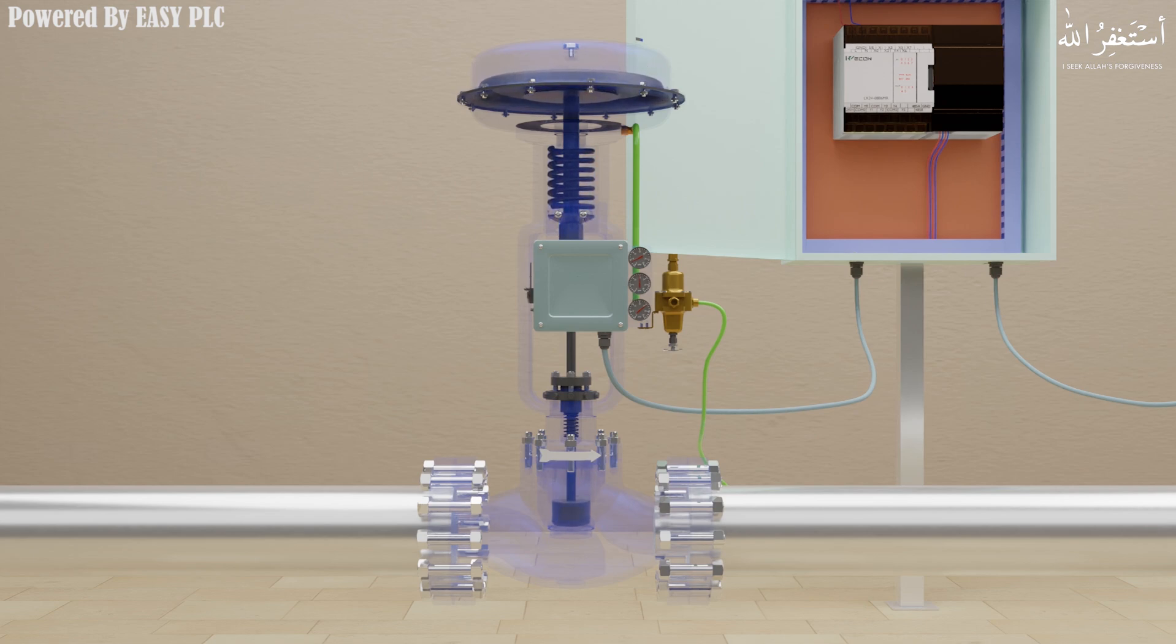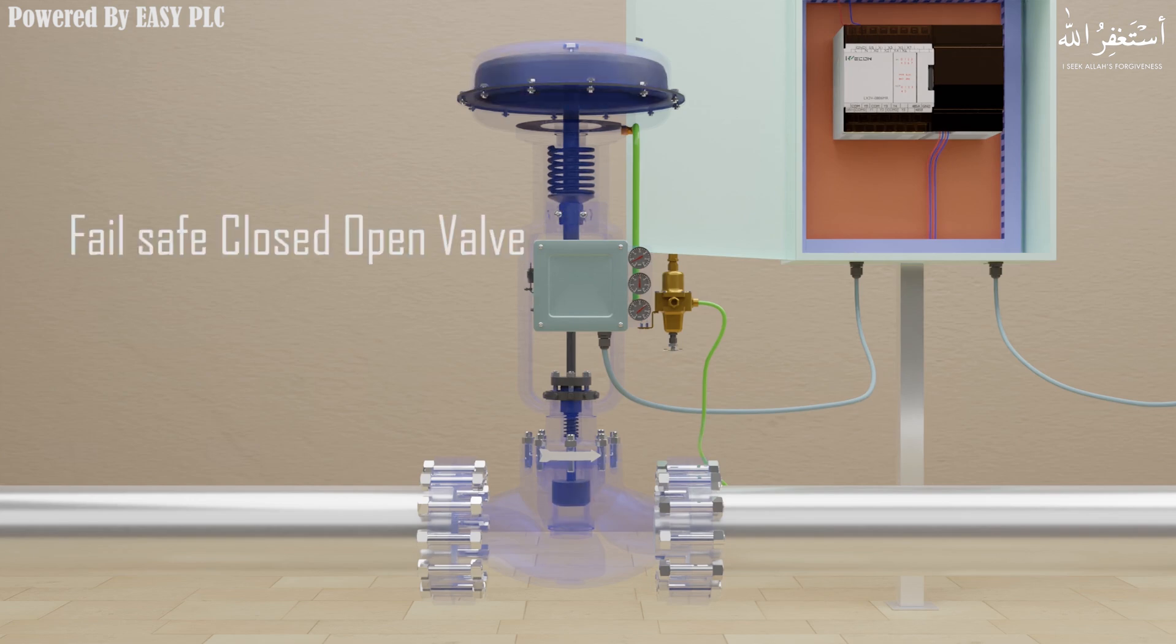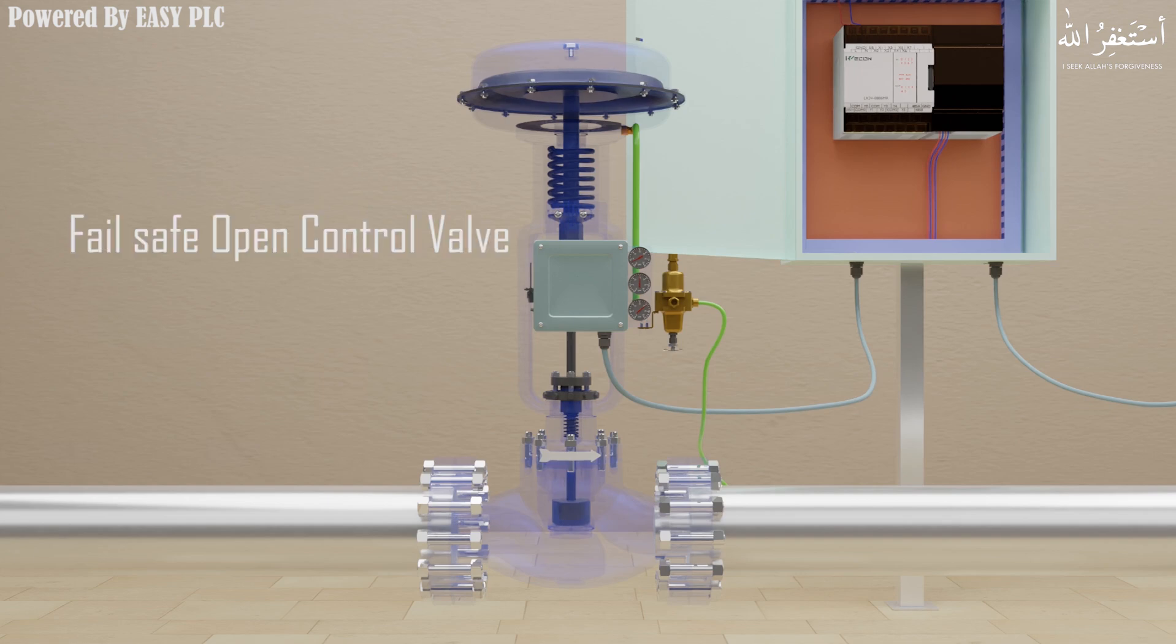The position to which the control valve is moved if a loss of signal occurs is referred to as the fail-safe mode. The type of fail-safe mode depends on the application for which the control valve is used. The actuator causes the valve to close in a fail-closed control valve, and the actuator causes the valve to open in a fail-open control valve.